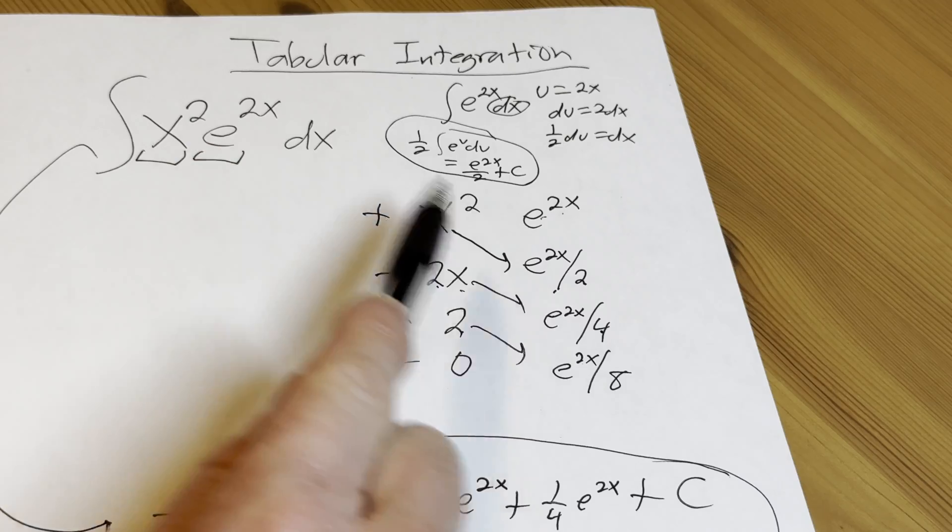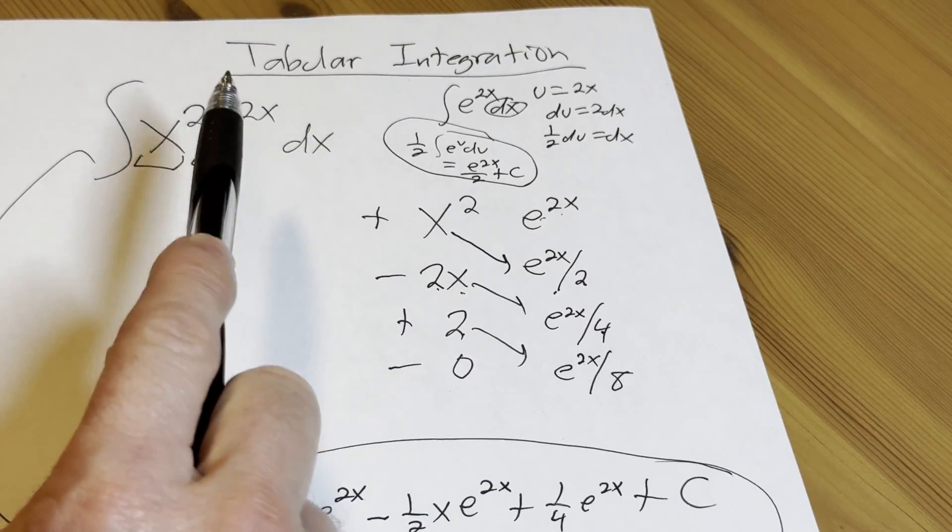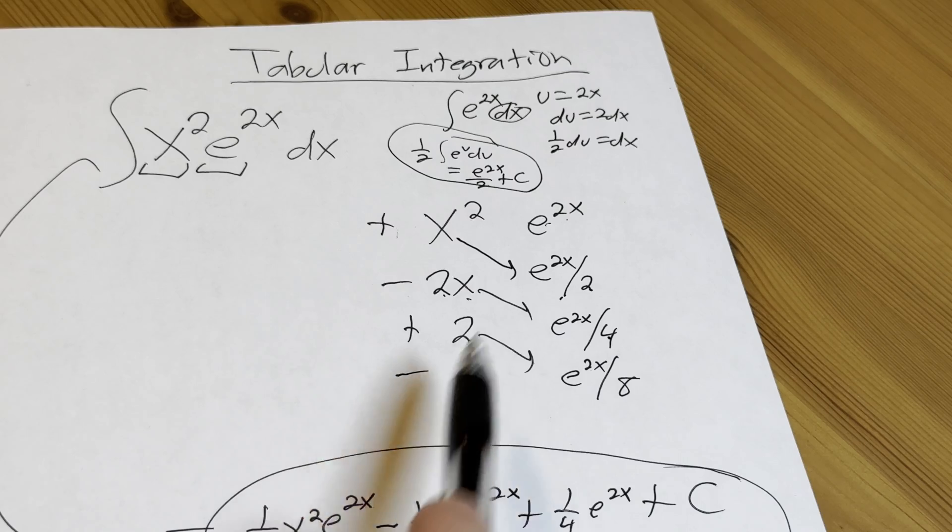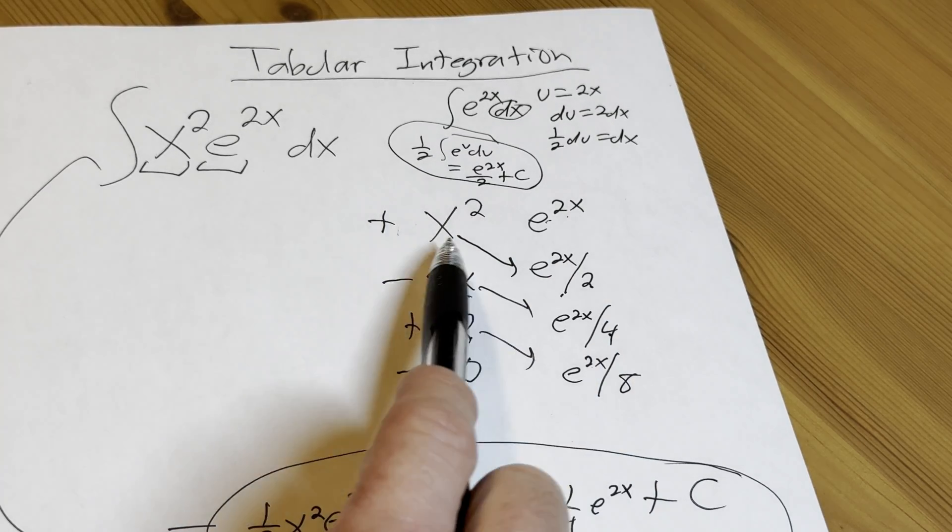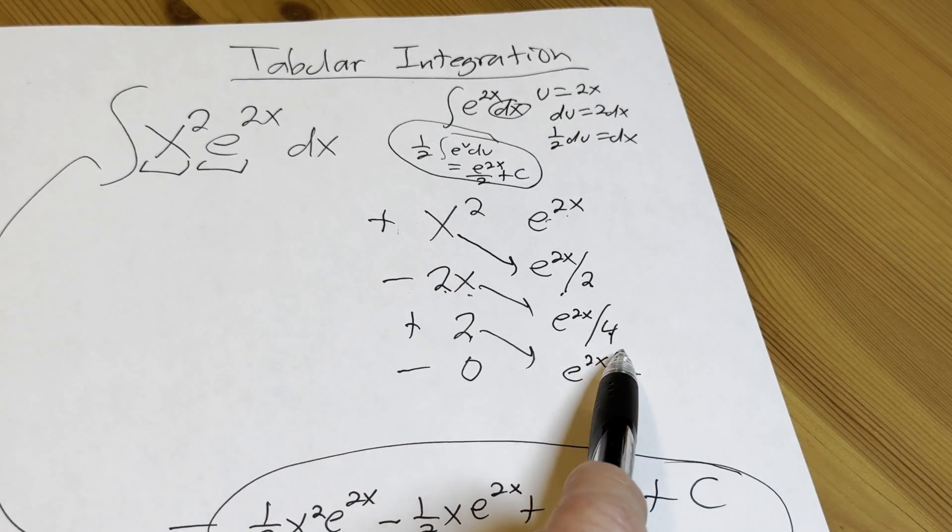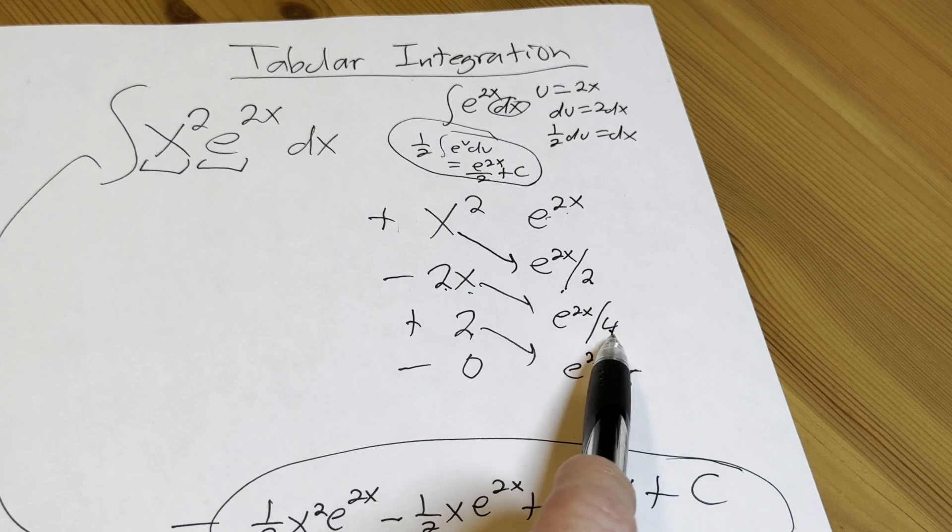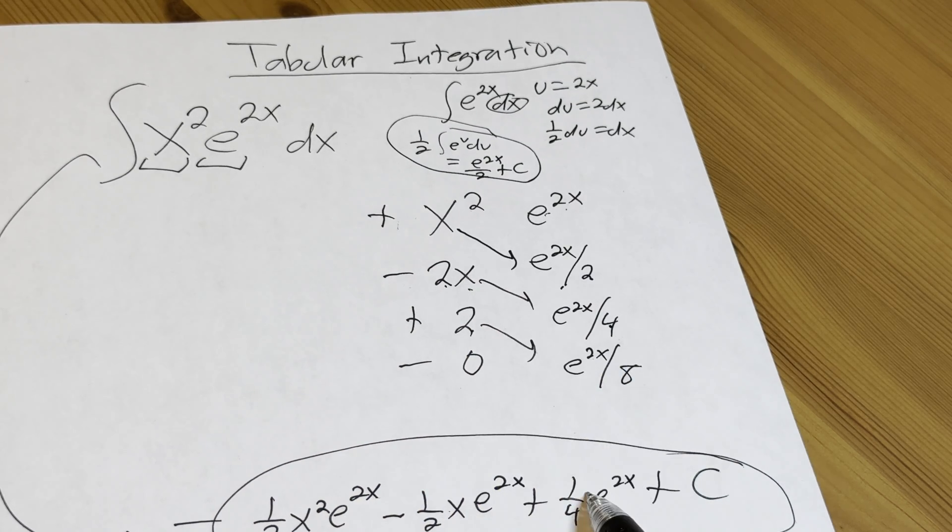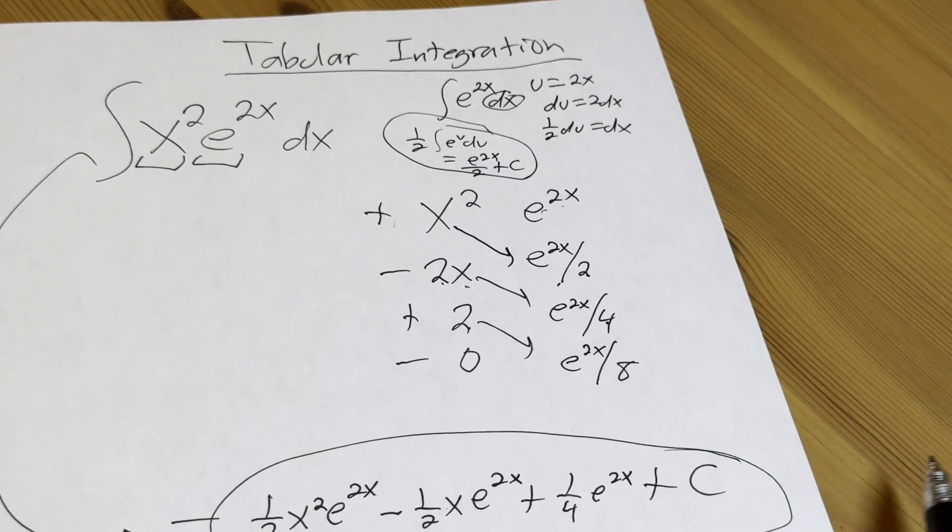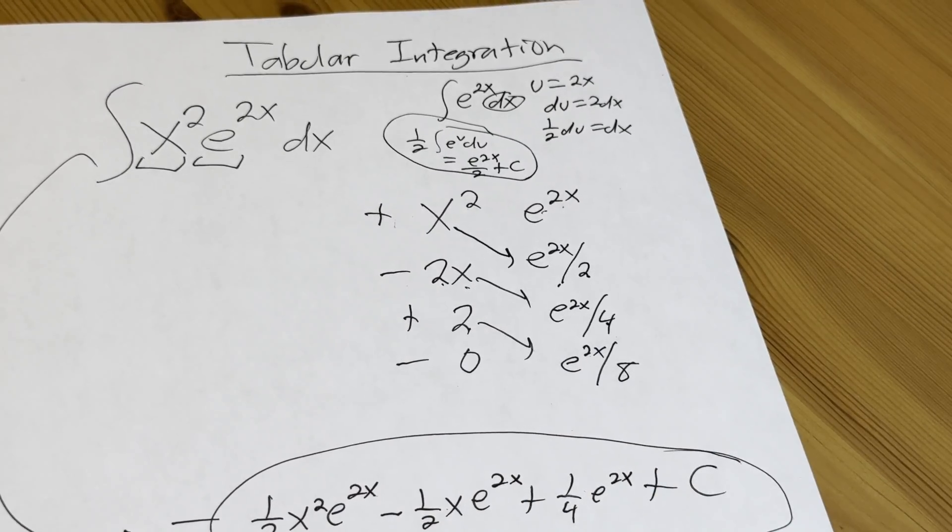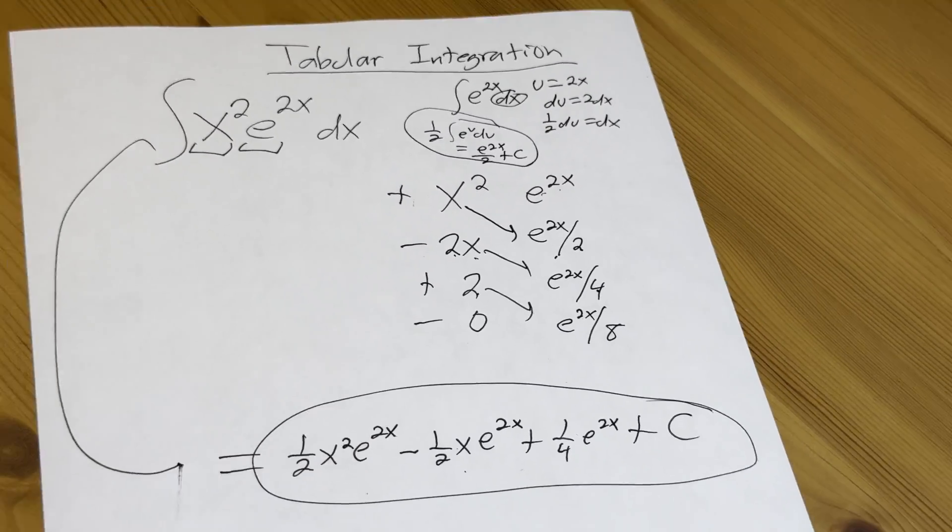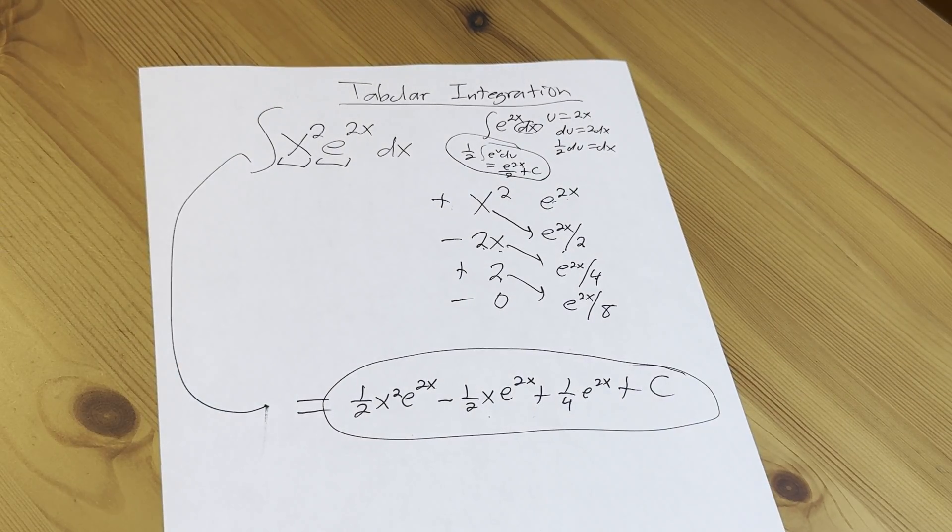Let's check: one half x squared e to 2x, boom, looks okay. Minus 2x times this, yep, because the 2 and the 4 become one half. The 2 and 8 are going to become one fourth, and that's positive that time, so everything looks okay. We added our constant of integration, so all is good. Hopefully you've learned some mathematics from watching this video. Take care.